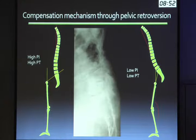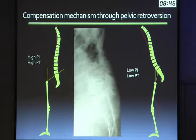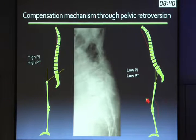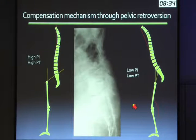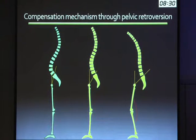People with very high pelvic incidence are going to have more range to compensate, as opposed to people with low PI. If you look at a standing x-ray and the sacrum is flat, that means they're compensating with pelvic tilt because their sacral slope is low. So if sacral slope has gone down, pelvic tilt has gone way up. When the spine has finished compensating, we have to ask the legs, hips, and knees to help.